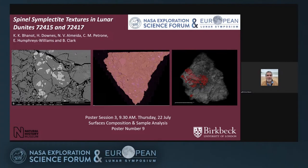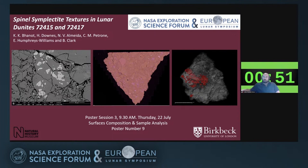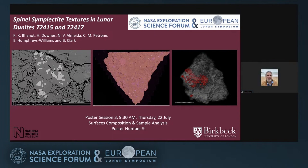Each represents a different stage in the history of the dunite. A common spinel type consists of ellipsoidal spinel-pyroxene clusters, 0.3 millimetres in size, composed of intergrowths of magnesian spinel, CPX plus or minus OPX plus or minus Fe metal. This is the oldest texture and indicates the sample originated at depths of 420 kilometres, equivalent to 22 kilobar pressure in the lunar mantle. It represents the transformation of garnet to a spinel-pyroxene cluster due to mantle upwelling, which brought the dunite to pressures of 8 kilobar.